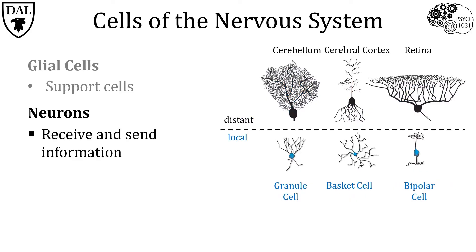Now take a look at the bottom row. Here are three examples of locally projecting neurons: granule cells in the cerebellum, basket cells in the cerebral cortex, and bipolar cells in the retina.